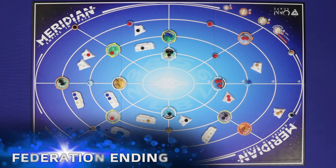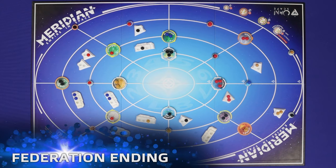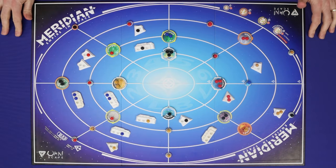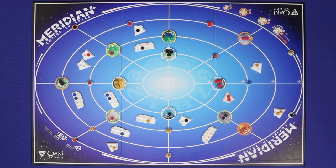A federation ending can be triggered when all of the planets and moons on the board have been colonized, or when one player has no more colonies left on the board, in which case that player is eliminated, or by the agreement of the players if you'd like to bring the game to a close.